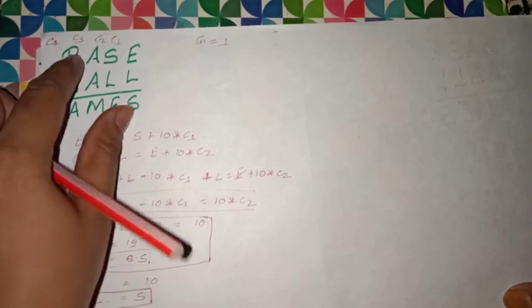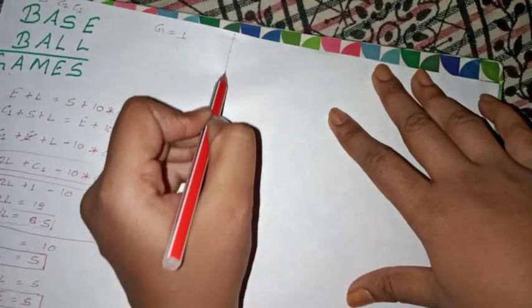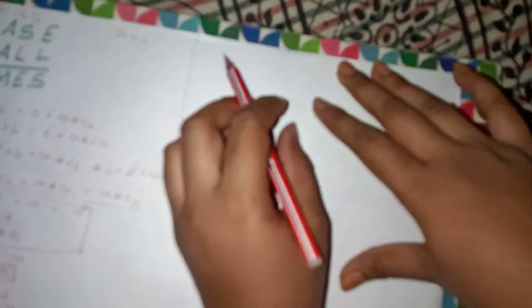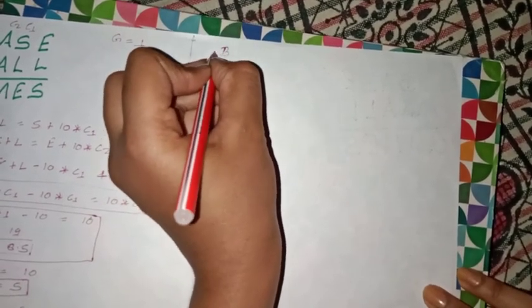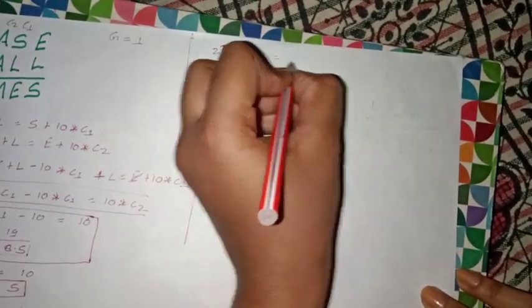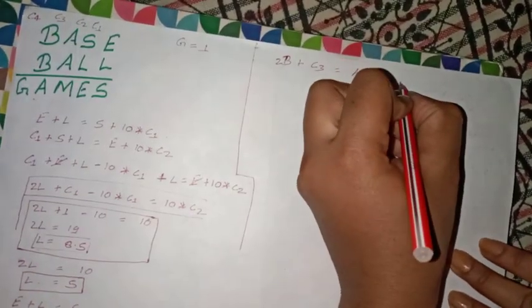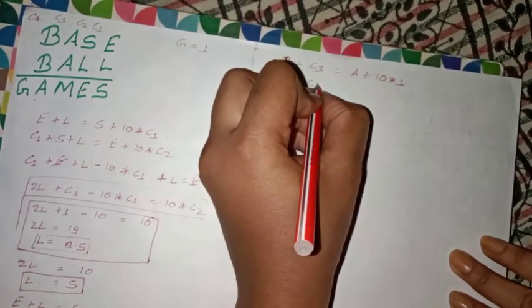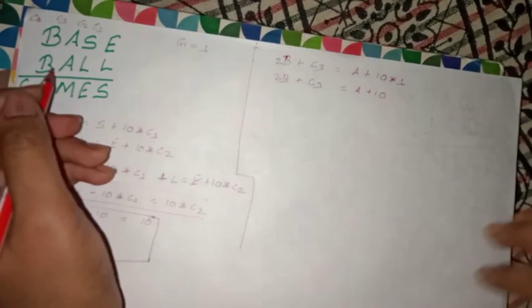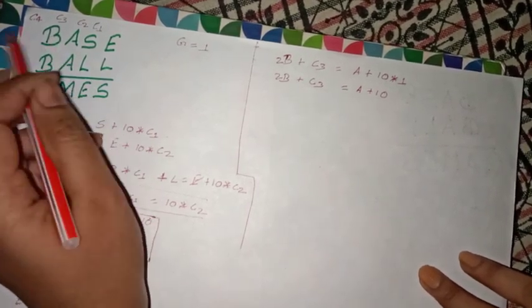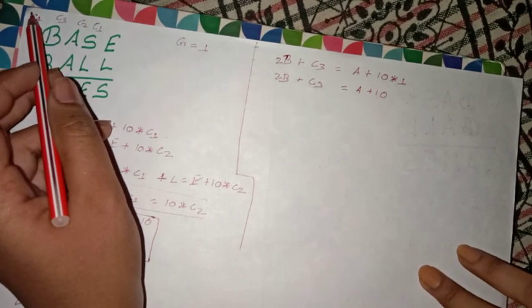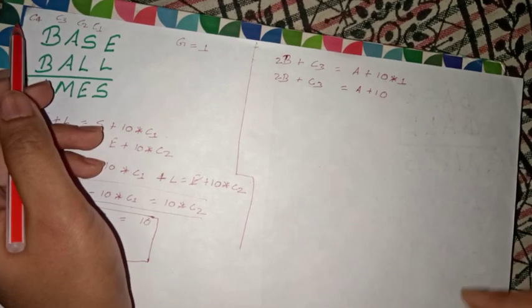Now we see this equation, this column. Here B plus B plus c3 equals A plus 10 times c4. Since c4 equals 1, we have 2B plus c3 equals A plus 10. If we take B equal to 4 or less than 4, we will never get carry c4 equal to 1.